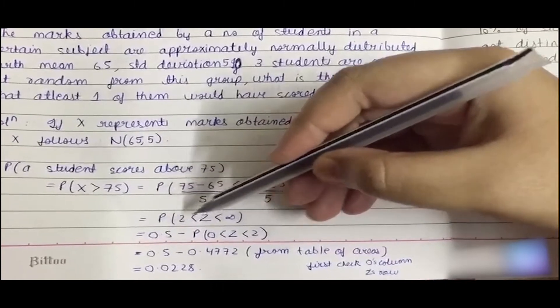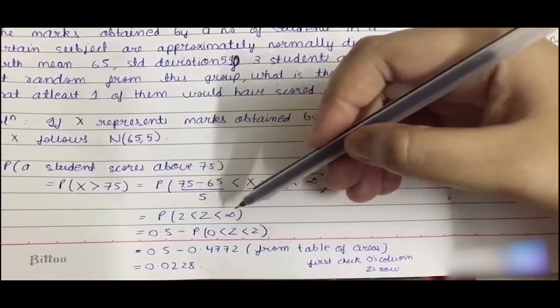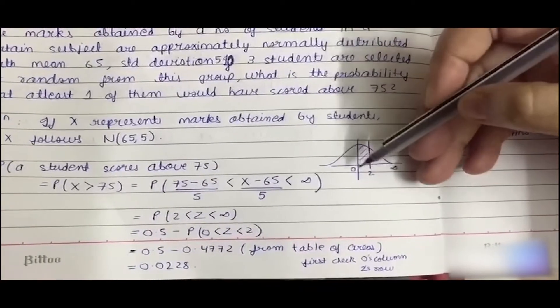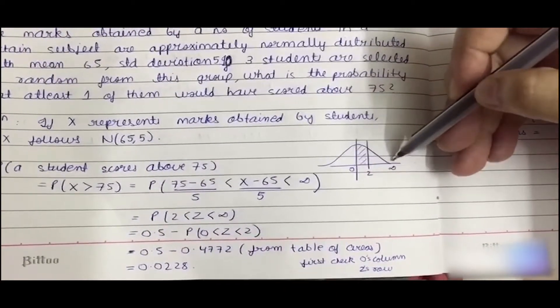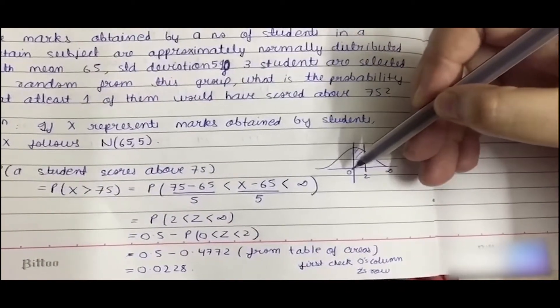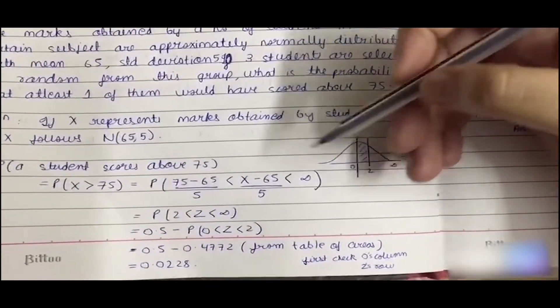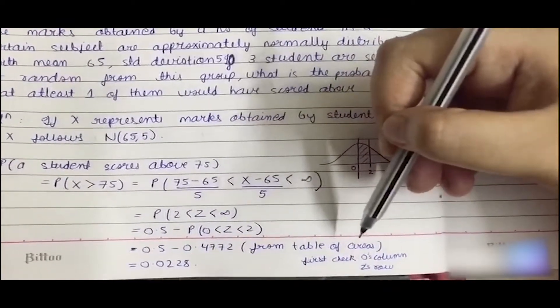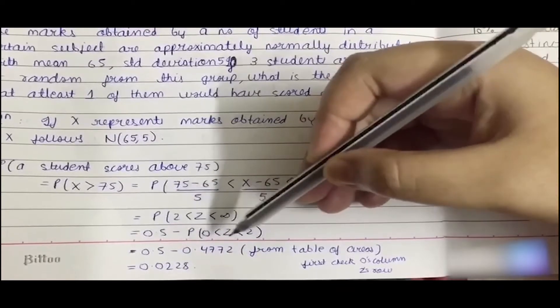We can see from this graph that if we want the area between 2 to infinity, we can get it from 0.5 minus the area between 0 to 2. So we applied that, and we can see from the table of areas to get the value of probability between 0 to 2.